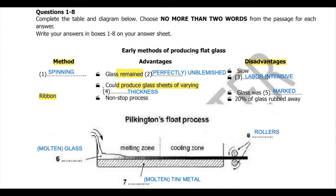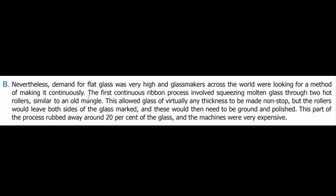The ribbon method's advantage is that it could produce glass sheets of varying thicknesses and was a non-stop process. The first continuous ribbon process involves squeezing molten glass through two hot rollers, similar to an old mangle. This allowed glass of virtually any thickness to be made non-stop, but the rollers would leave both sides of the glass marked and these would then need to be ground and polished.